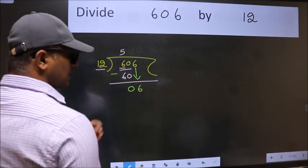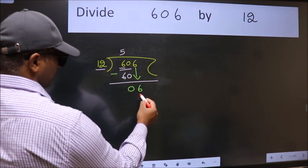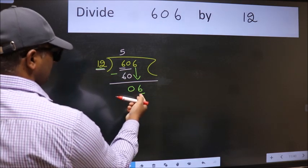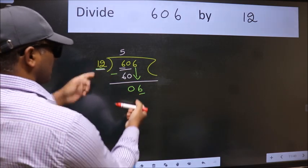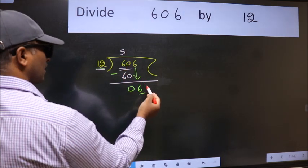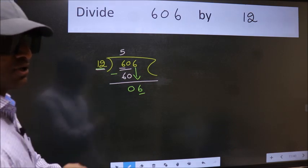After this step, the mistake happens and the mistake is this. Here we have 6 and here 12. 6 is smaller than 12, so what many do is they directly put dot, take 0, which is wrong.